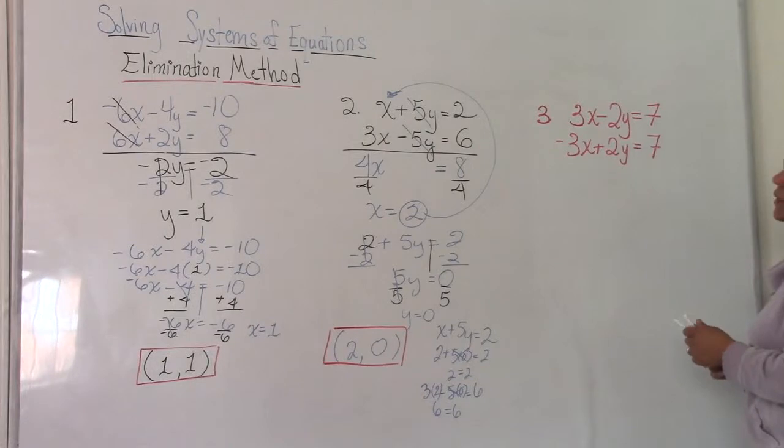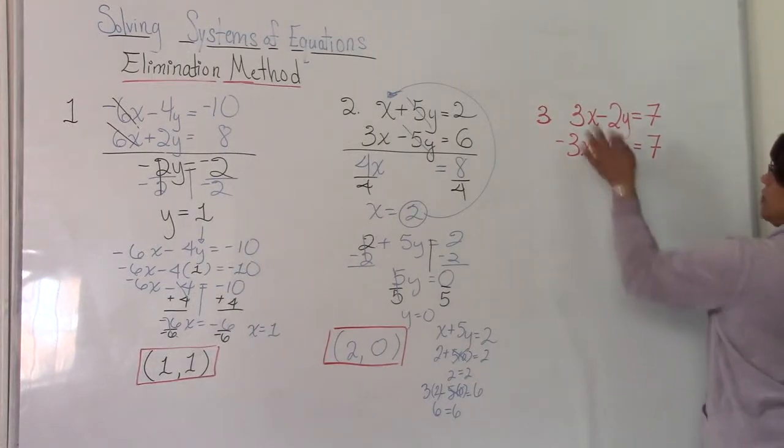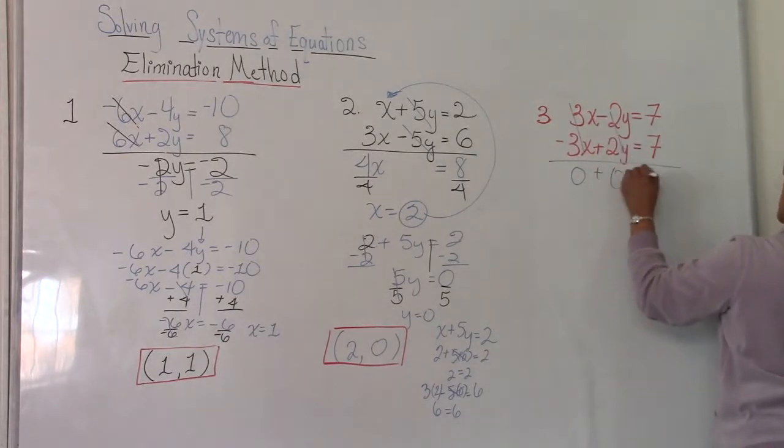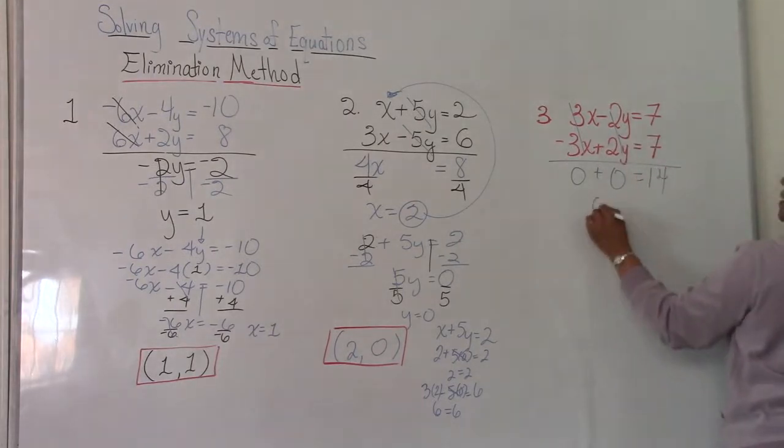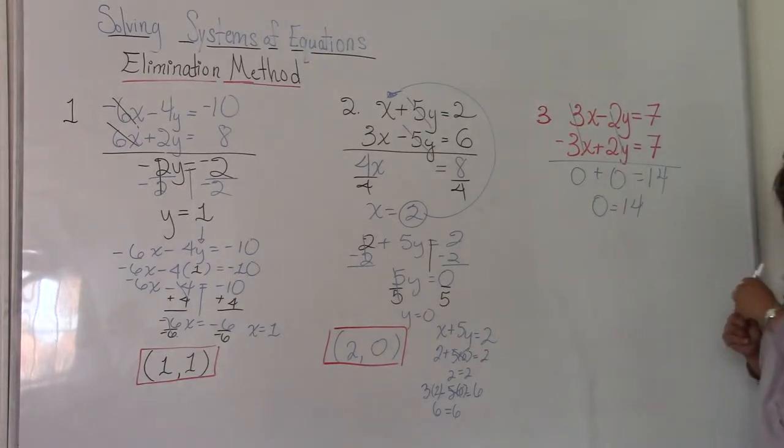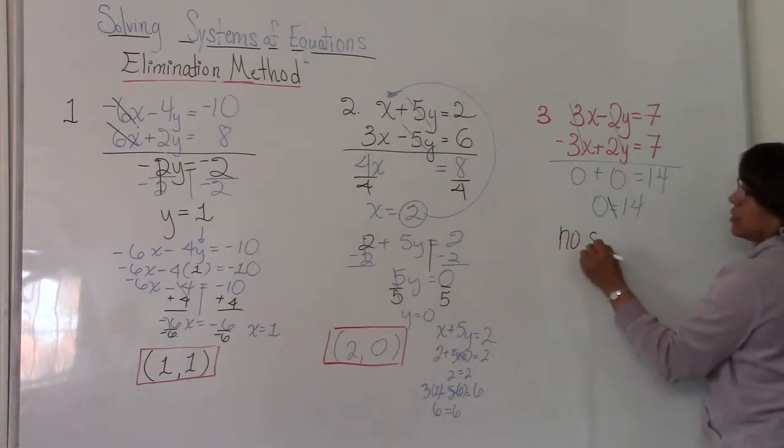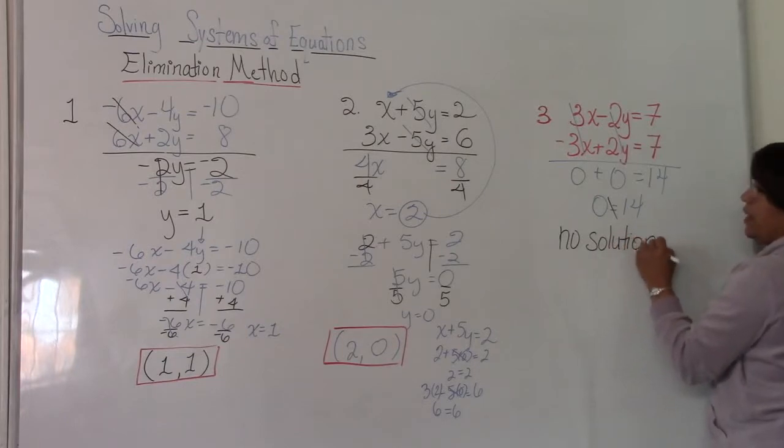Now let's go to this third problem. In our third problem, it looks like we definitely have opposites in one equation and the other. So the 3's cancel out and go to 0. The 2's cancel out and go to 0. 7 plus 7 is 14. 0 plus 0 is 0. Is 0 equal to 14? No, it's not. You're right. That's a false statement. So for this, there is no solution. No matter what you plug in for x and y, you will never get 7.